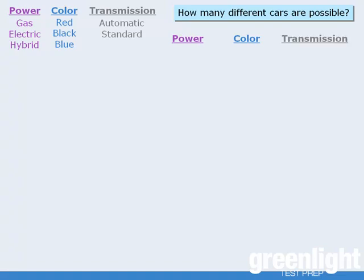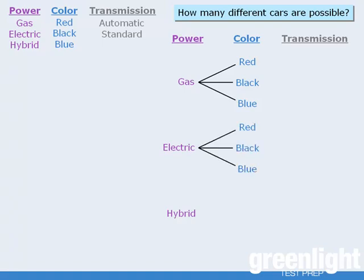Let's begin with selecting the car's power source. Here we have three options. If we choose to have a gas-powered car, then we have three options for the color of that car. Similarly, if we choose to have an electric car, then we have three options for the color, and so on for the hybrid.